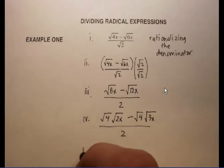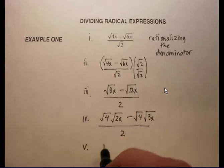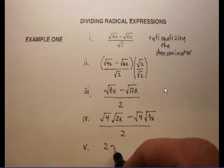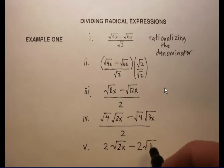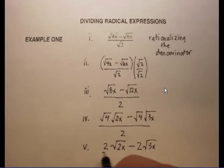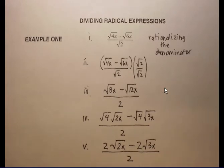When I take the square root of 4 in my next step, I'm going to get 2 and then the square root of 2x minus 2, again the square root this time of 3x, all over 2.